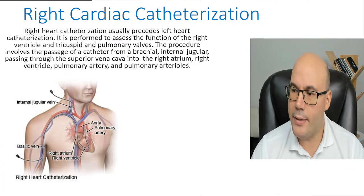We need baseline vital signs and we need to know the quality and presence of peripheral pulses to compare post-procedure. For example, if the right femoral artery approach is used, we have to know how those distal pulses are, and then compare post-procedure to determine if circulation is intact. Without a baseline, we cannot tell if there is a difference.